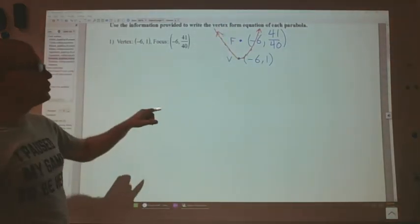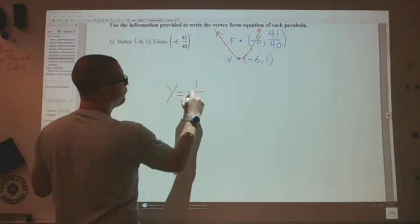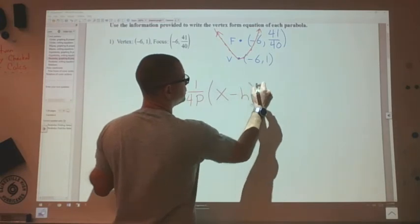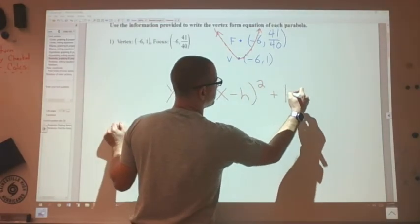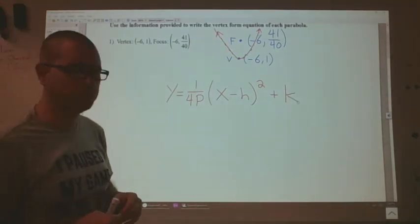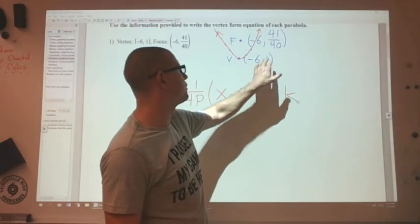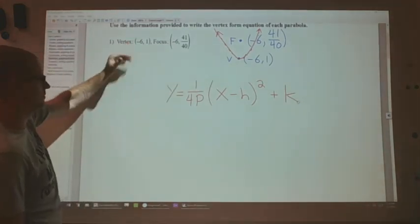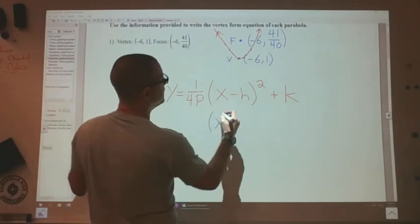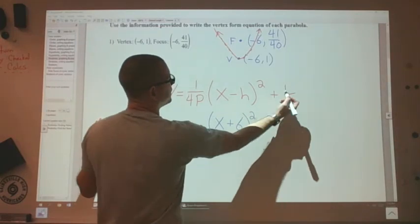Which means the equation is going to be y is equal to 1 over 4p, x minus h squared plus k. So I know that model. Now I just have to fill in that information. h and k are the horizontal and vertical components of the vertex. So that I can do. That I can fill in. This would be x minus negative 6. So I know that's going to be a plus 6. And then plus k plus 1.